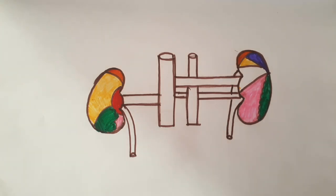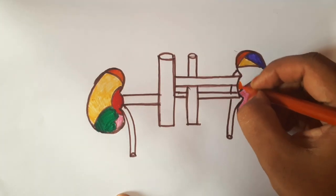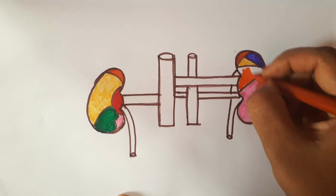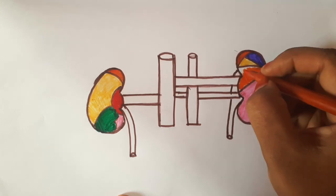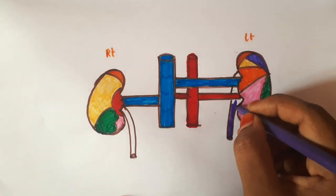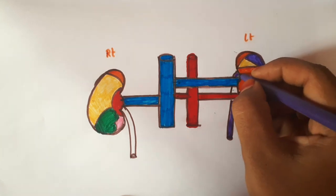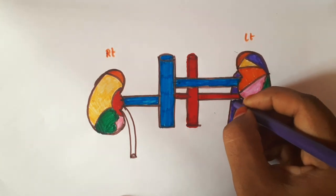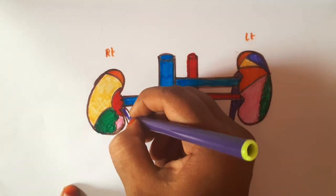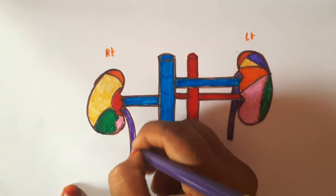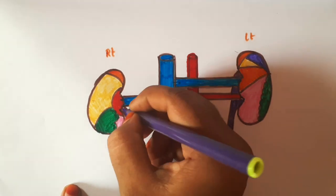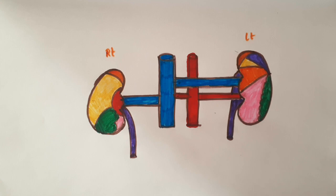This is the pancreatic area. This upper expanded part of ureter is known as the renal pelvis. This is the medial border. Both the medial borders give attachment to the suprarenal gland. And the pelvis gives attachment continuous as the ureter.